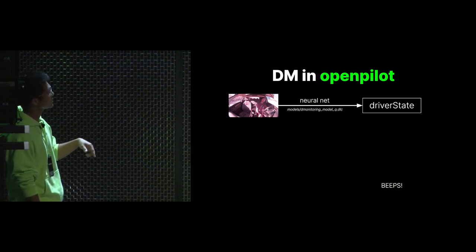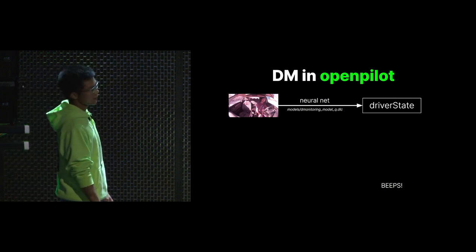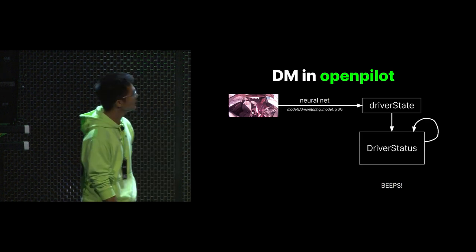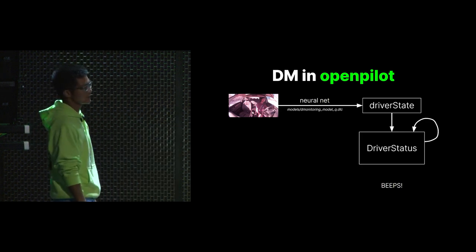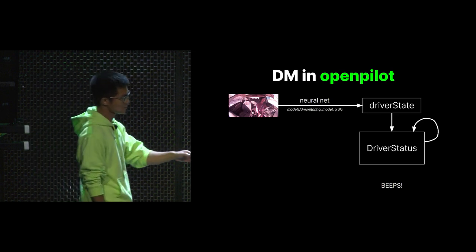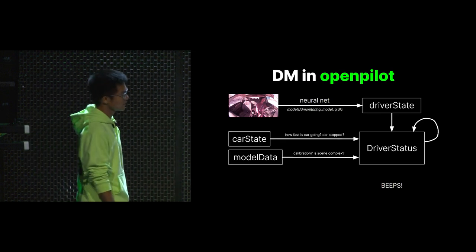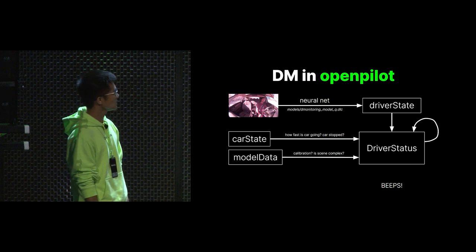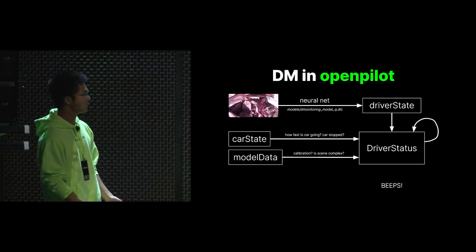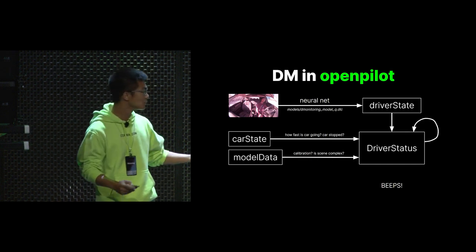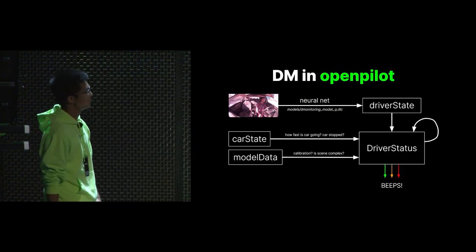We call these parameters driver state, which includes things like whether there's a face, where the face is, where the eyes are, whether the eyes are closed, and where the face is looking. Then we have a classical state machine that takes in the driver state — all these parameters — and processes them in a loop as new pictures come in. It also takes into account things like the speed of the car and how the camera is mounted, or even how complex the scene is, to adjust everything. The system uses all this information to determine whether the driver is too distracted, and if so, an alert is shown — you get the beeps.